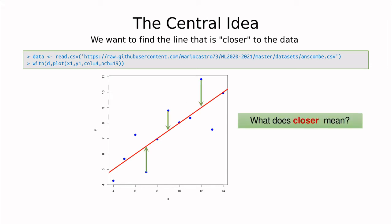So this is a good candidate for trying to draw this line that is closer to the data. But what does closer mean in this context?